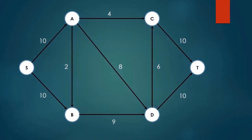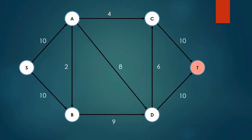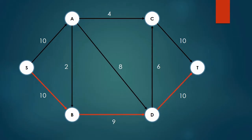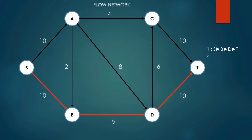In the network, first identify both the source node and the sink node. Starting from the source node, identify a shortest path to the sink. In our first example, we have a path going from S to B to D to T. We must find the minimum weighted edge along our path, which in this case is 9, corresponding to the edge B to D.